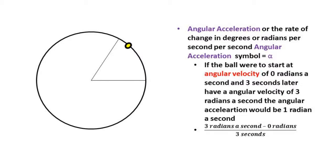If a ball were to have an initial angular velocity of zero radians a second, and three seconds later have an angular velocity of three radians a second, the angular acceleration would be one radian a second. The equation for finding angular acceleration is final angular velocity minus initial angular velocity over the time passed between initial and final angular velocity.